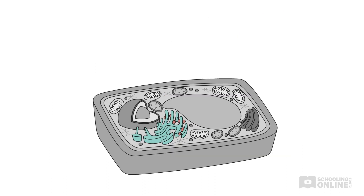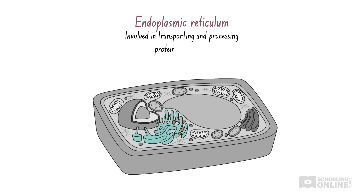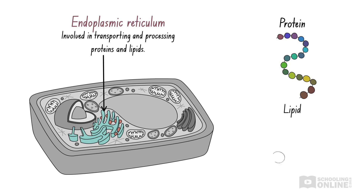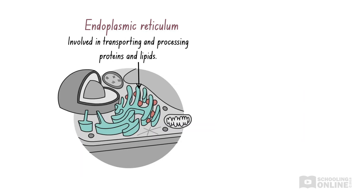Let's move outside the nucleus and explore organelles involved in building and processing biological molecules. The endoplasmic reticulum is an organelle involved in transporting and processing proteins and lipids. Remember, proteins are made of polypeptides, or long chains of amino acids, while lipids are long hydrocarbon chains, such as fatty acids. The endoplasmic reticulum connects the nuclear membrane, which surrounds the nucleus, to the cell membrane, which surrounds the entire plant cell. It forms a network of flattened, interconnected membranes known as cisternae.